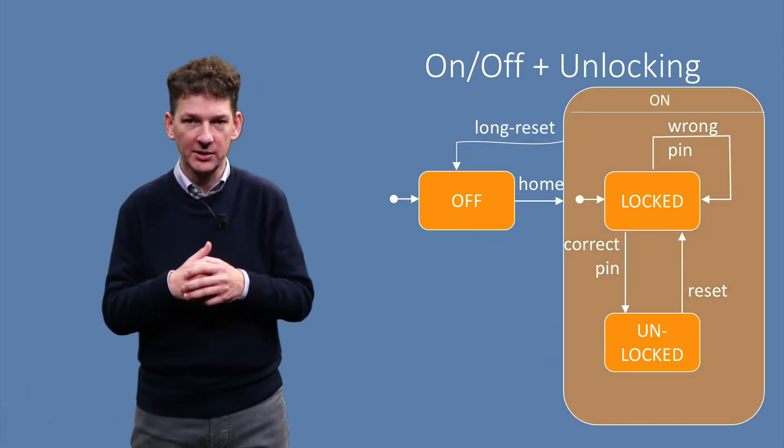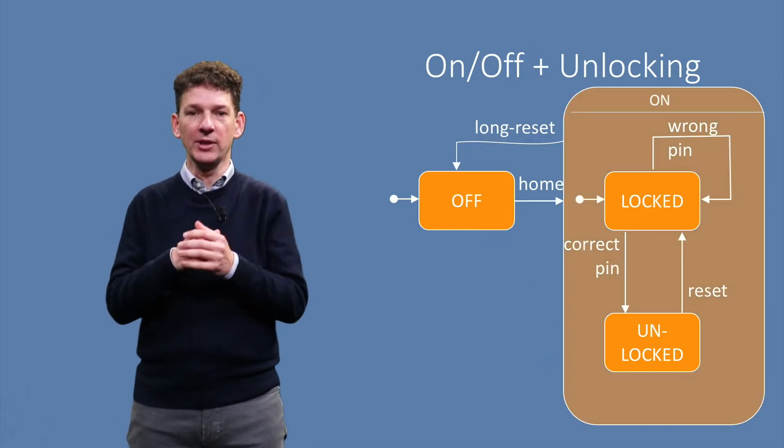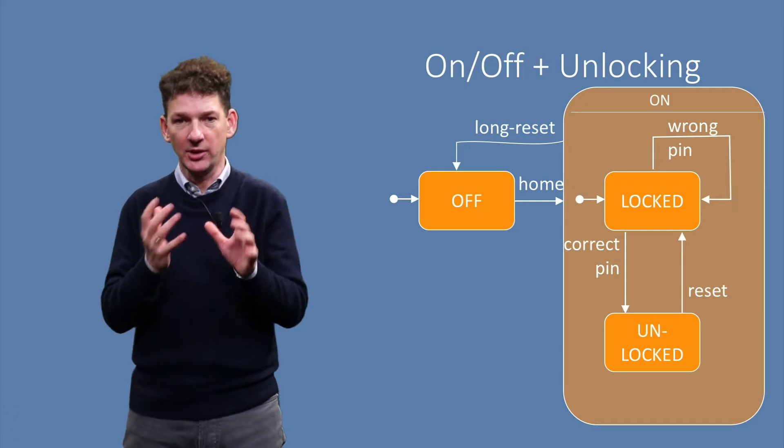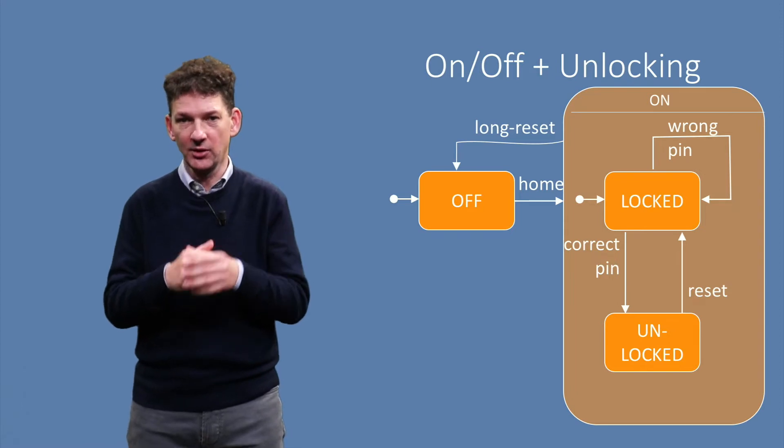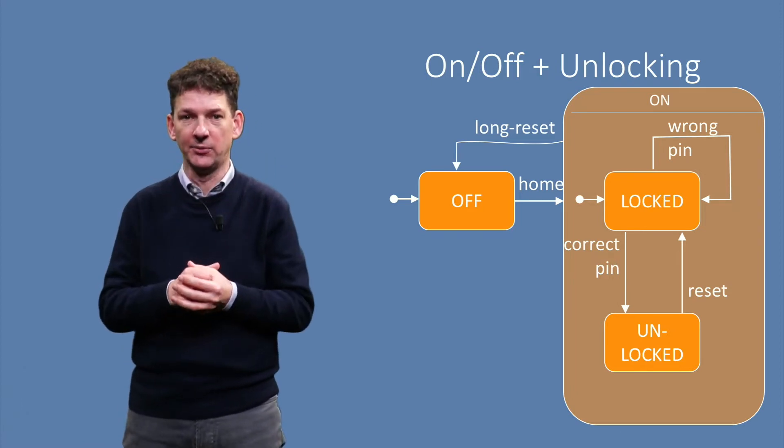To simplify the diagram, we introduce an extra state, the large light brown state named ON. This is a super-state with two sub-states in it.